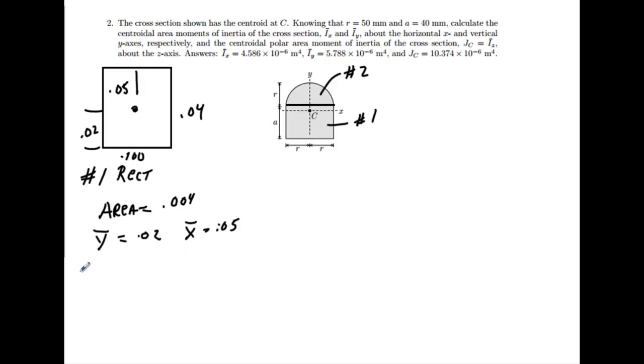At this point I would go ahead and calculate the moment inertia of this thing about its own centroid. So Ix, we'll call this the x axis, is going to equal 1/12 times the base, which is .100, times the height cubed, .04 cubed. When we run that number, we will get 5.33 times 10 to the minus 7.